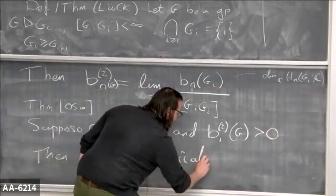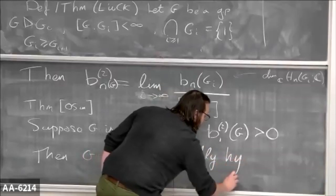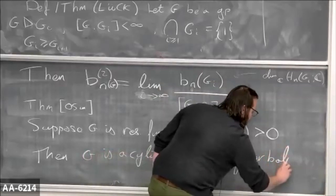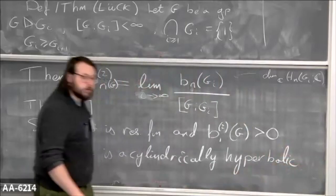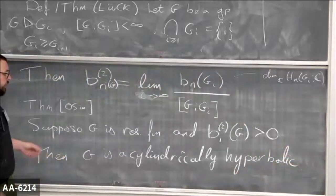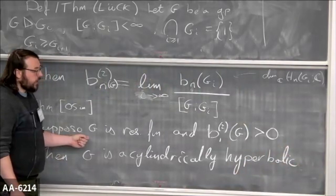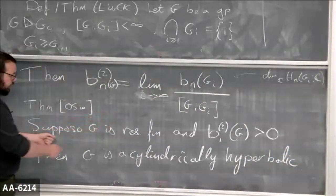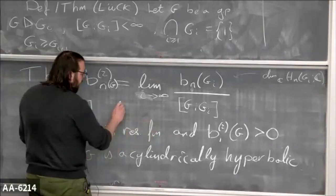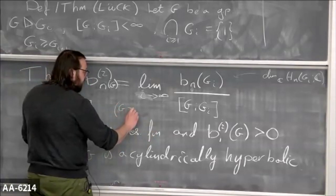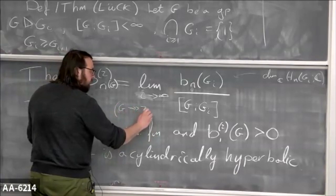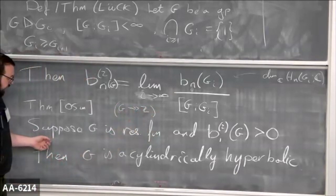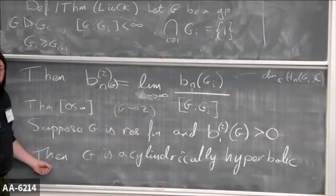Then, amazingly, G is acylindrically hyperbolic. Carolyn talked a bit about hyperbolically embedded subgroups and cylindrical hyperbolicity. So if your first L² Betti number is non-zero, and maybe with this extra condition of residual finiteness — or you can replace this with G having a surjection to the integers — then G is acylindrically hyperbolic.